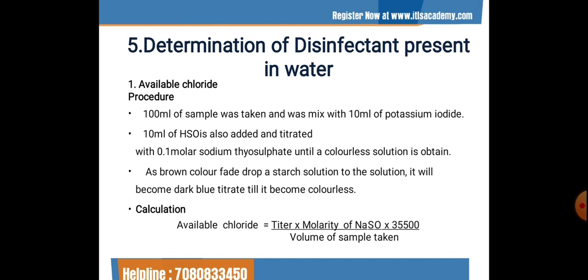To detect the presence of chloride ion, the formula is: titer × molarity of Na₂S₂O₃ × 35,500 / volume of sample taken. We note the volume of sodium thiosulfate at the endpoint and put it in the formula. Molarity is 0.1 molar, multiplied by 35,500, divided by 100 ml sample volume. On calculation, we get the available chloride ion concentration in the water sample.